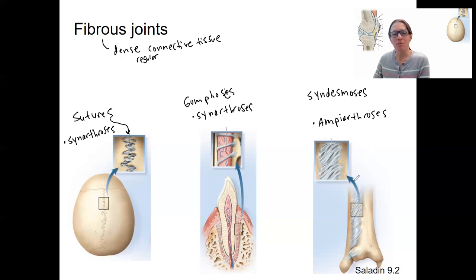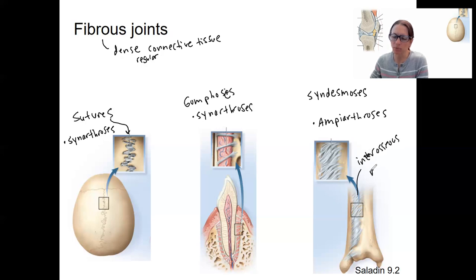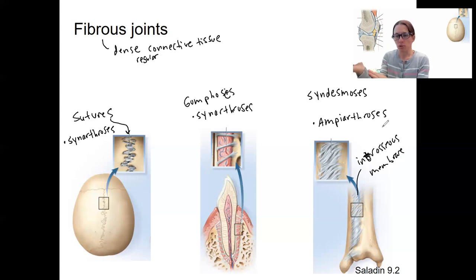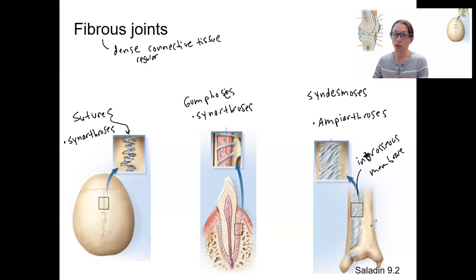Syndesmoses are designed to hold those two bones together. This is called an interosseous membrane — a tissue membrane that is between two bones — found in between the radius and ulna of your forearm, and as shown in this picture, between the fibula and tibia of your lower leg.